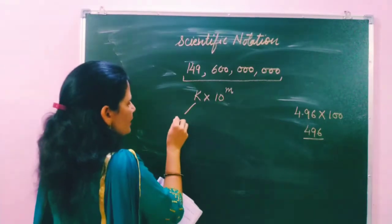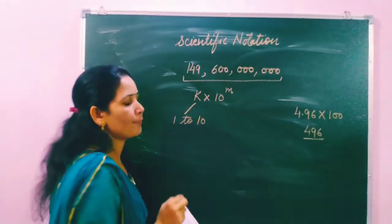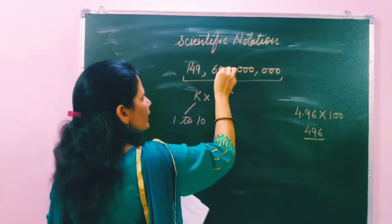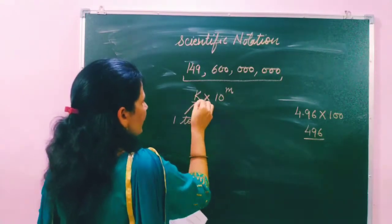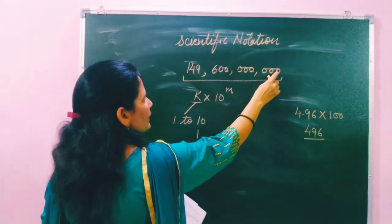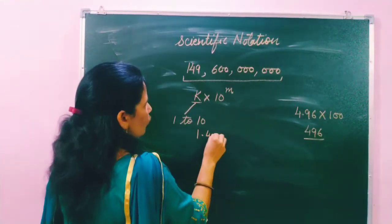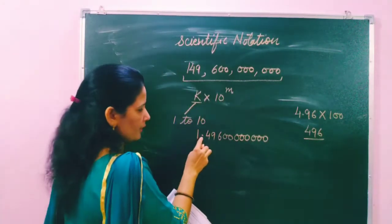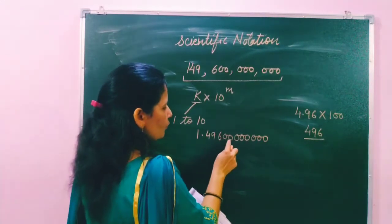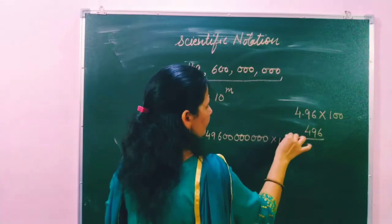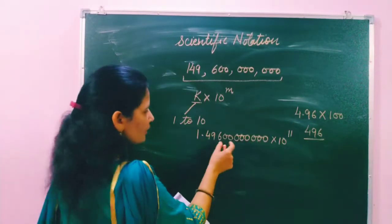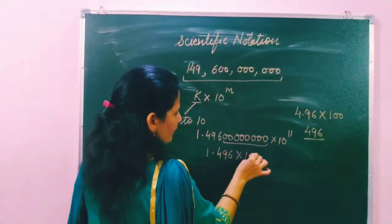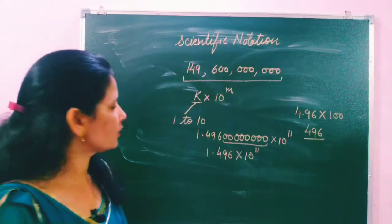Here k can be any number from 1 to 10. So to convert a large number: first count all the digits — for example, 12 digits total. Leave the first digit as k, place the decimal after it, then write the remaining digits. Count the digits after the decimal — say 11 digits — and write 10 raised to the power 11. In short form, we write 1.496 × 10^11. This is scientific notation.